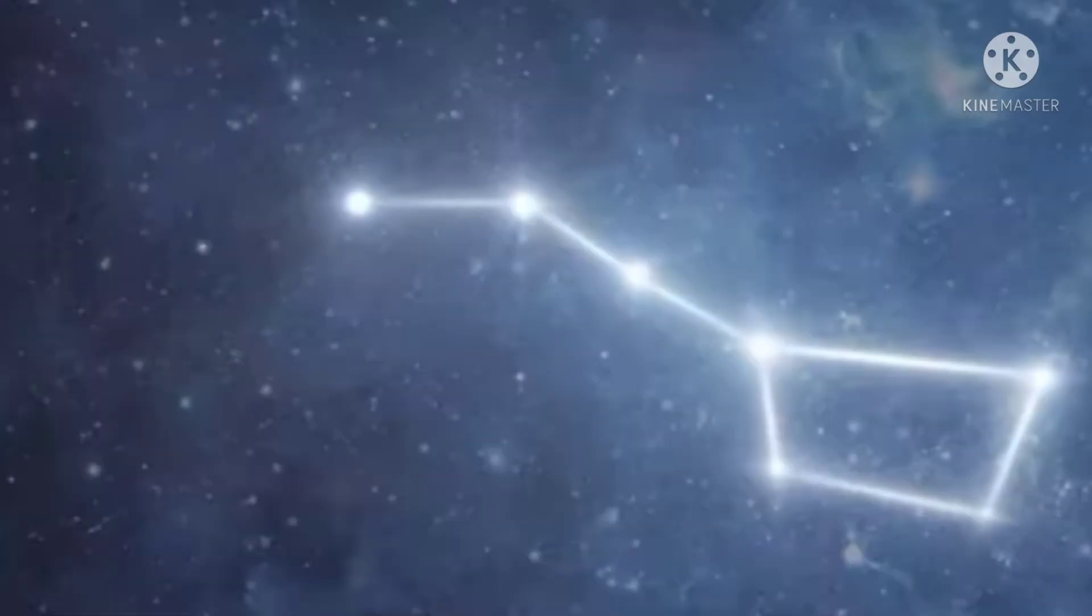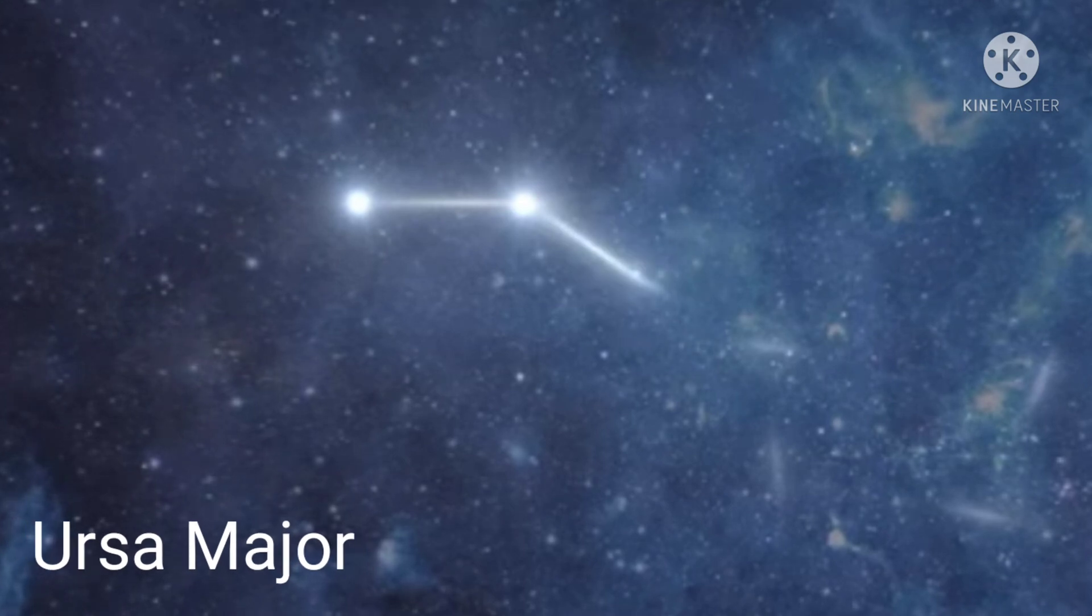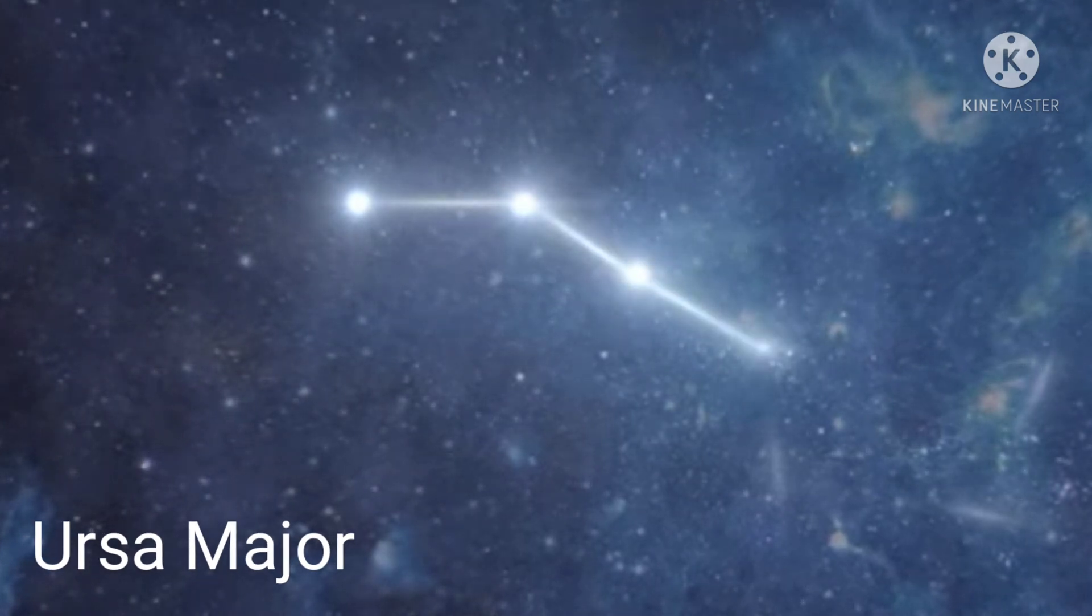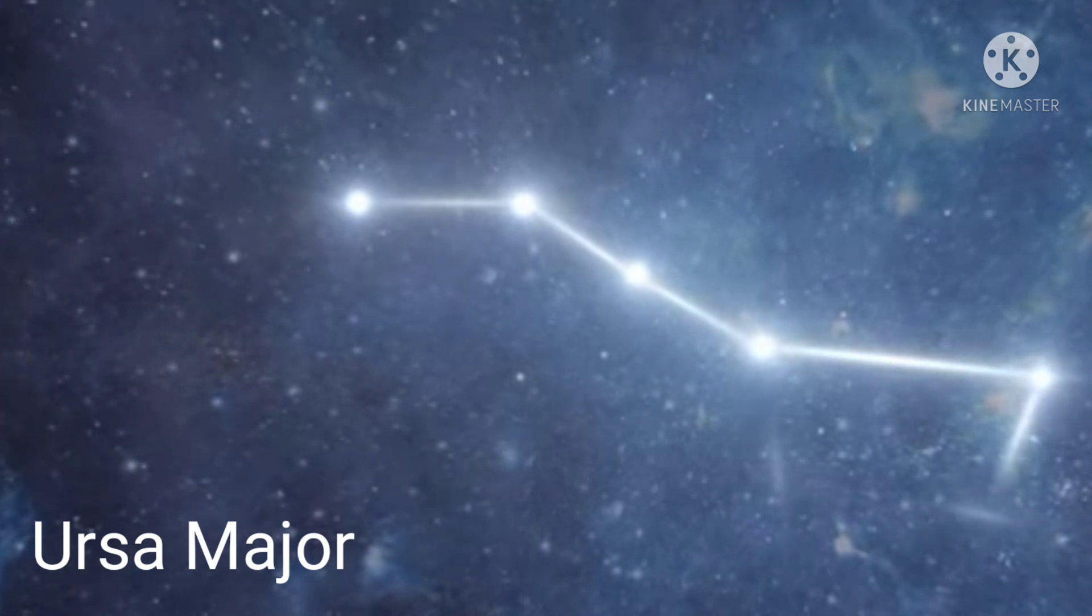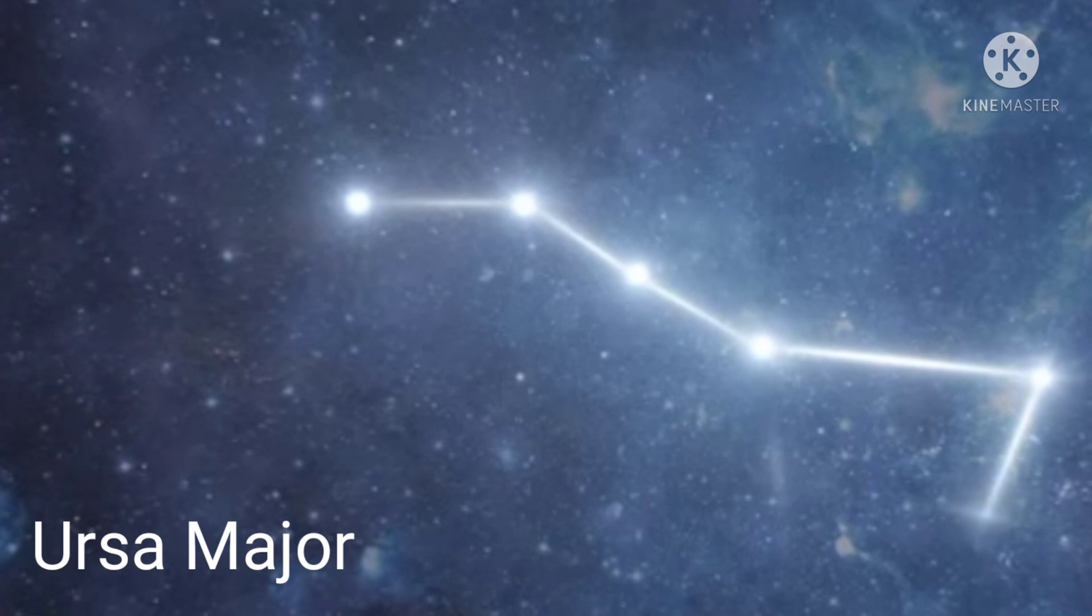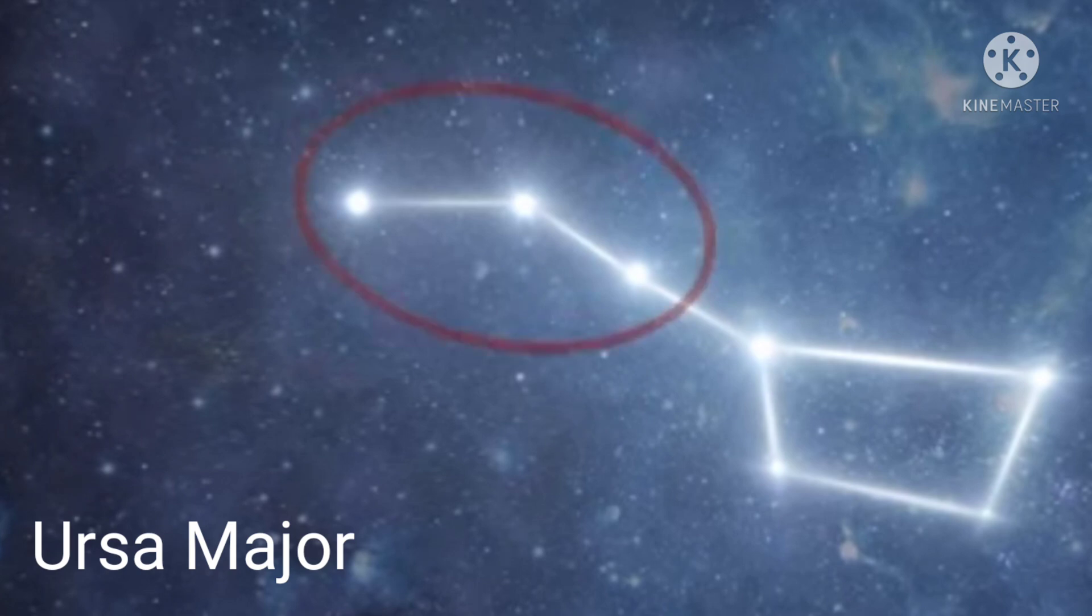One of the most important constellations which we can see during summer is Ursa Major. This is also known as the Great Bear or Big Dipper. It consists of seven prominent stars. It appears like a big ladle in which there are three stars in the handle of the ladle and four in its bowl. This can be easily identified in summer in the early part of night. The two stars at the top of this constellation are called pointers.